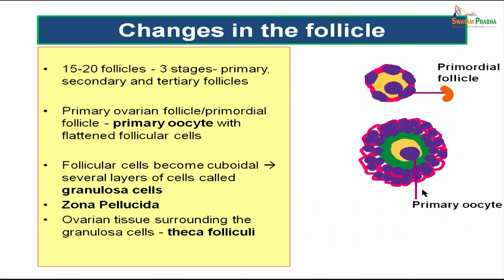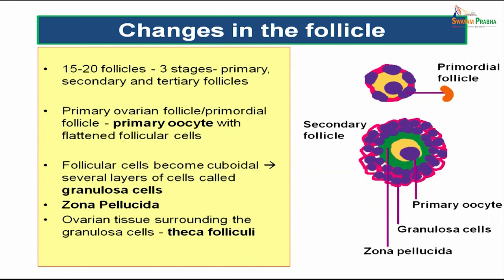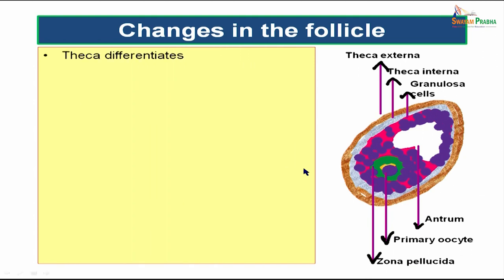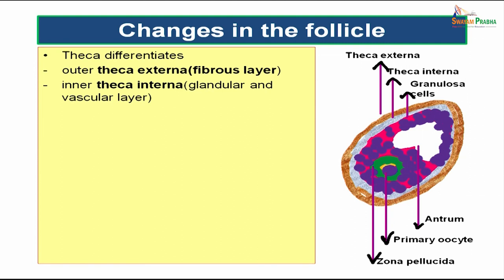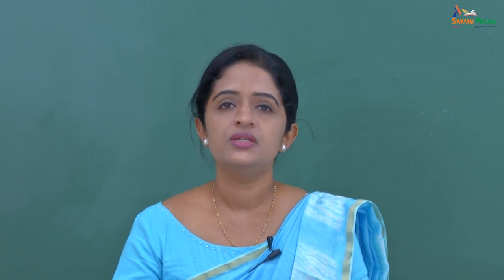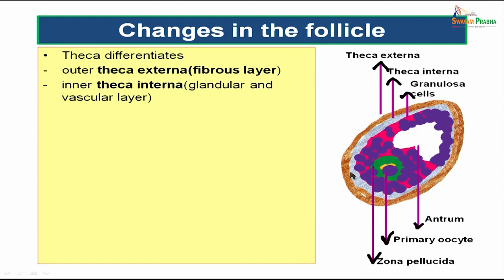The primordial follicle consists of a primary oocyte covered by a single layer of flattened follicular cells. As the follicular cells multiply and become cuboidal, forming several layers, they are called granulosa cells. The zona pellucida lies immediately next to the primary oocyte, with granulosa cells outer to it, and the theca folliculi outermost.